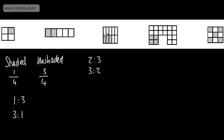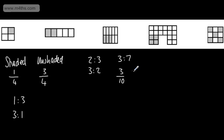If we look at this one here, I've got three shaded and I've got seven unshaded, so it would be a three to seven ratio. We can see that if I wanted to write this back as fractions, adding these two together, we'd have three tenths and we'd have seven tenths. So we can see the connection between ratios and fractions.